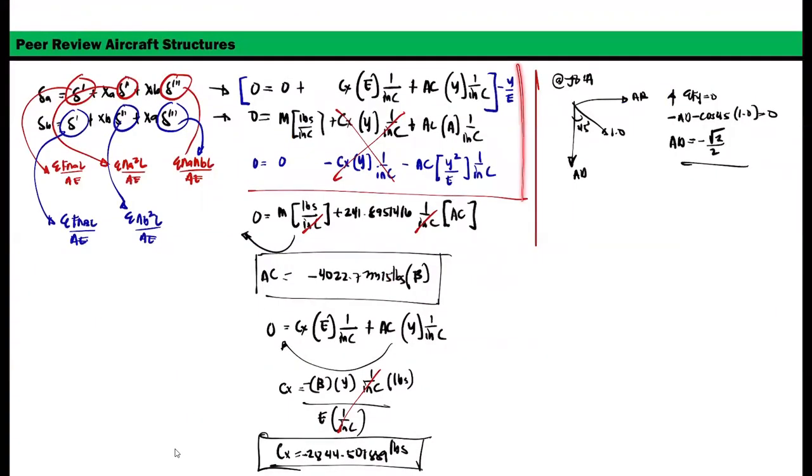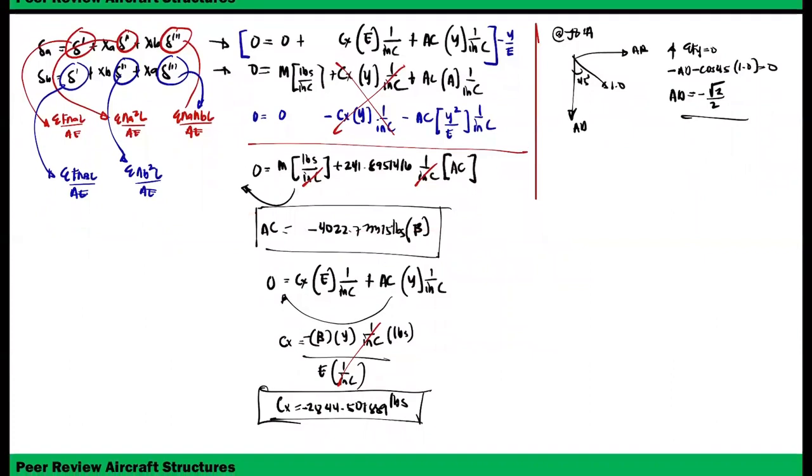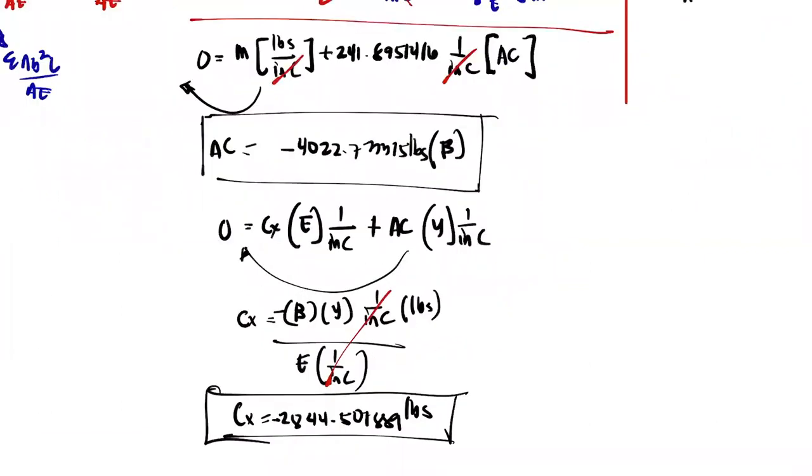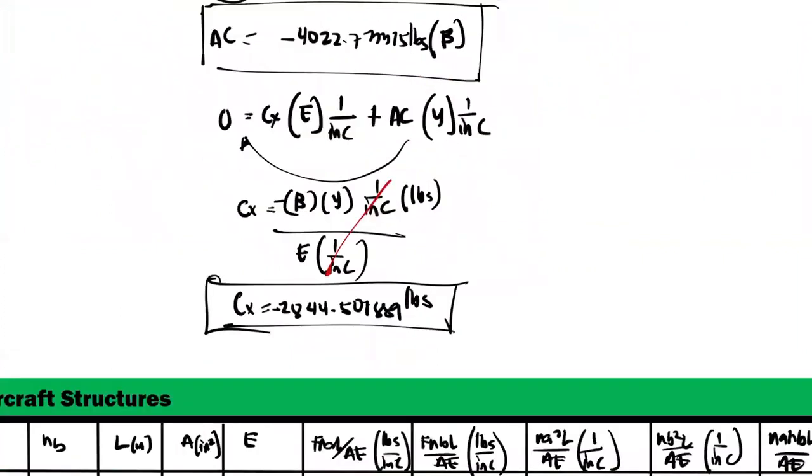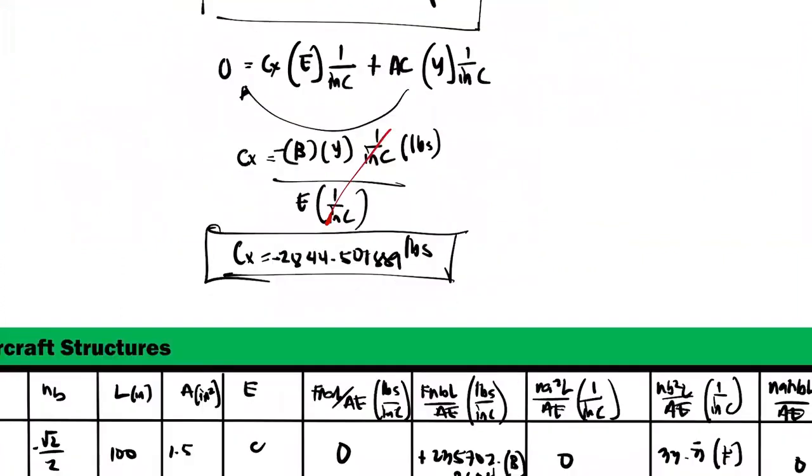So by elimination method, as you can see, we can get the value of our member AC. That is negative 4022.73315 pounds, store value B. And then C sub X is negative 2844.501889 pounds, store value C. Okay.